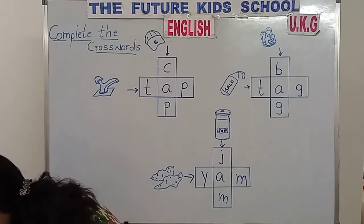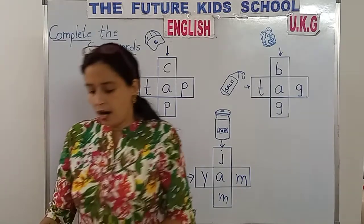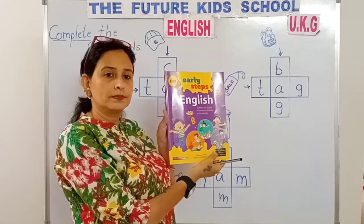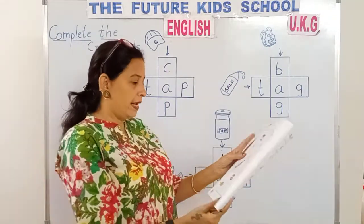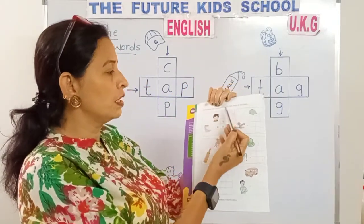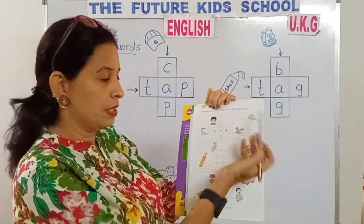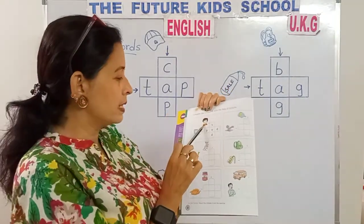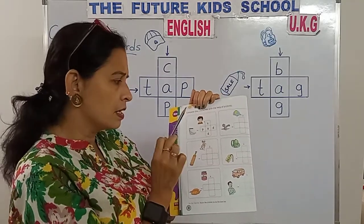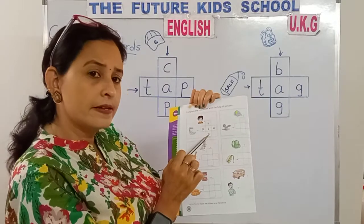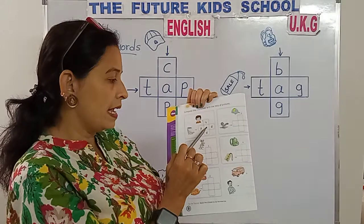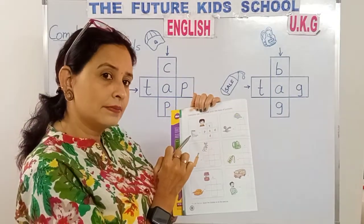Now children, let's take out our English book. Page number 8. Complete the crosswords with the help of the pictures. Look here — this is a sad face. This face is sad. Sad. S-A-D. Sad. This is a pad. P-A-D spells pad.